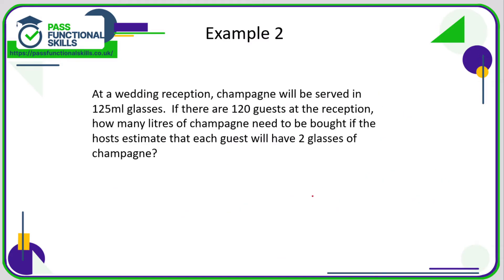For this example, we've been told that champagne is being served in 125 millilitre glasses and there are 120 guests and they're budgeting for two glasses of champagne per person. So if one glass is 125 millilitres, then the two glasses that they're going to have is going to be two times 125, which is 250 millilitres.